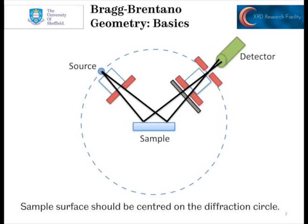We can see that this is built around the principle of the diffraction circle. This is often called Bragg-Brentano geometry, and sometimes it's called reflection geometry. You can see why: our X-ray source is up to the left, firing X-rays through some apertures onto the sample, which is then reflecting to the detector according to Bragg's law.